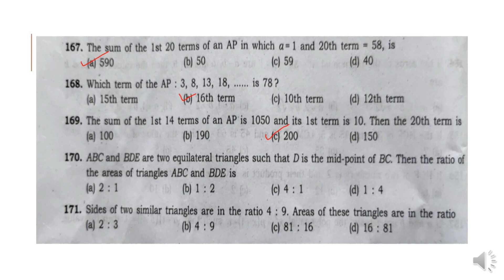Question 170: A, B, C and B, D, E are two equilateral triangles such that D is the midpoint of BC. Then the ratio of the areas of triangles ABC and BDE is 4 is to 1. Option C.